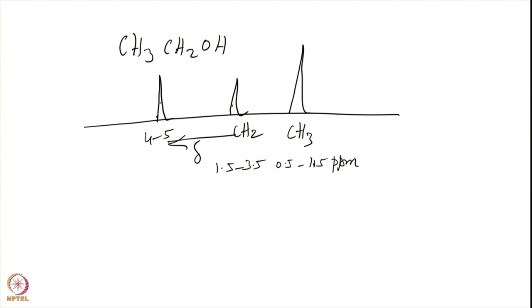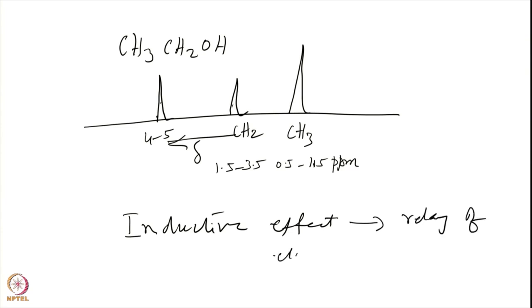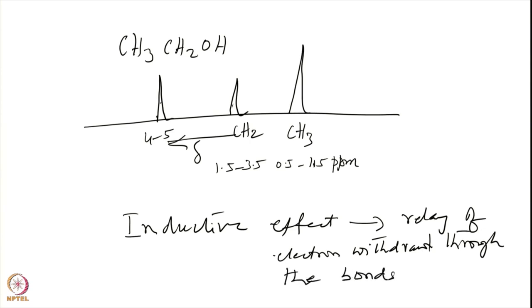Similarly, if you have aldehydes or oxygen-containing groups, or amide-containing groups, you will have different kinds of chemical shifts. These two — electronegativity and hybridization — are the most important parameters influencing chemical shifts. The electronegativity or inductive effect is the relay of electron withdrawal through the bonds; as you go further from the electronegative group, the inductive effect dies down.